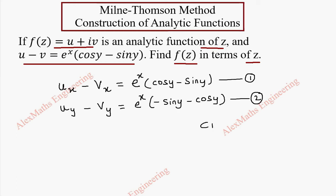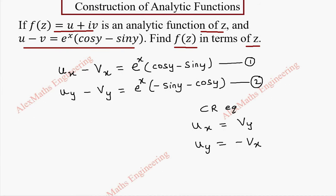Now using the Cauchy-Riemann equations, we know ux equals vy and uy equals minus vx. Let's substitute: uy becomes minus vx, and vy becomes ux.